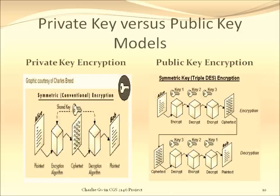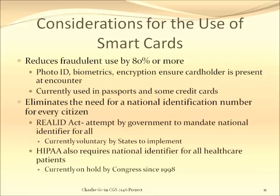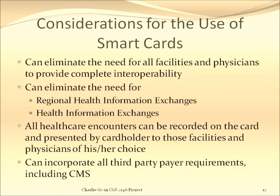Here is the migration path of encryption and decryption. Although complex to most people, it is easy enough to see that the public key process is much more complex and therefore much more secure. For many years, our government has tried to give us some sort of a national identification number. A couple of examples are cited above. The smart card eliminates the need for a one-number-for-everyone approach, thus thwarting the government's efforts again.